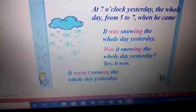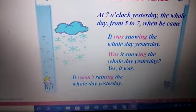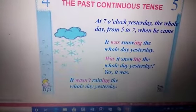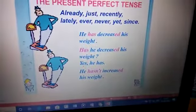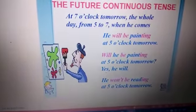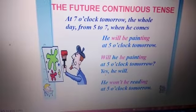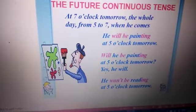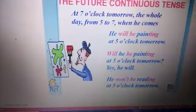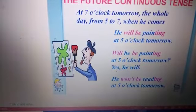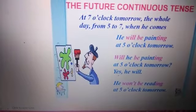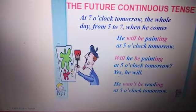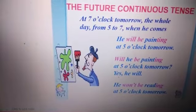It is denoting an action which took place yesterday. Now the next part is the future continuous tense. What does the future continuous tense denote? For example: 'He will be painting the whole day tomorrow' or 'He will be painting at five o'clock tomorrow.' 'Will' or 'shall' — both are correct. It is denoting an action which would be going on tomorrow.